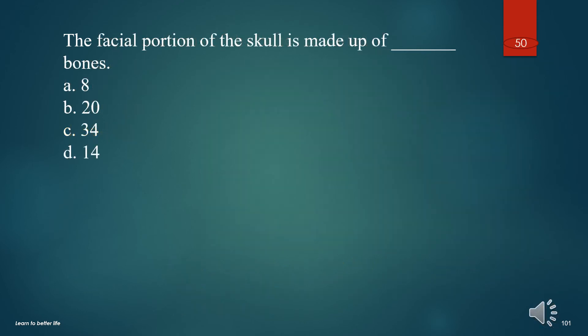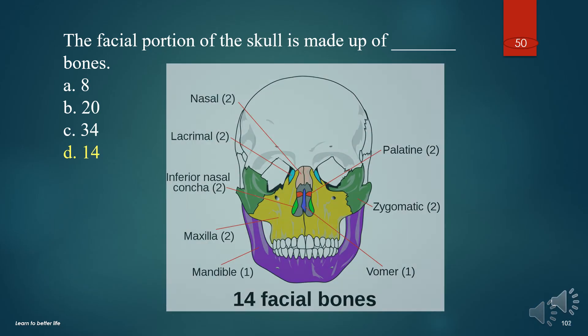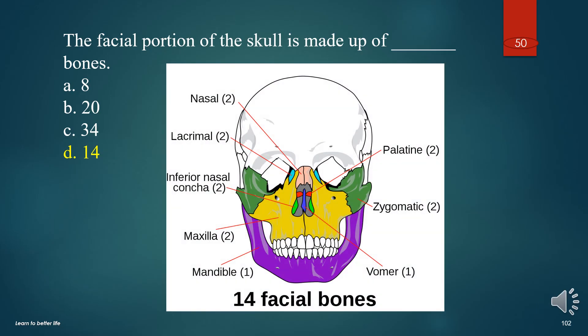The facial portion of the skull is made up of how many bones? A. 8. B. 20. C. 34. D. 14. The answer is 14.